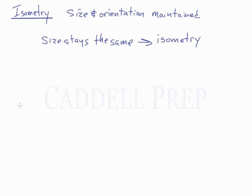But there are two different types of isometry. There is direct isometry and there is opposite isometry.